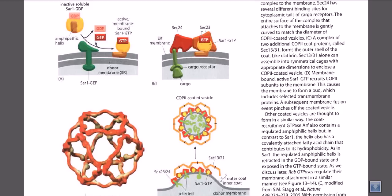So SEC23 attaches with SAR1-GTP, and SEC24 has a binding site for the cargo receptor. The cargo receptor in turn binds with the cargo protein inside the endoplasmic reticulum lumen and attaches with SEC24. This way we are forming a complex of different molecules. SAR1 is activated, embeds itself, SEC23-SEC24 dimer comes in, SEC23 attaches to SAR1-GTP, SEC24 attaches to the cargo receptor, forming a pre-vesicular complex.